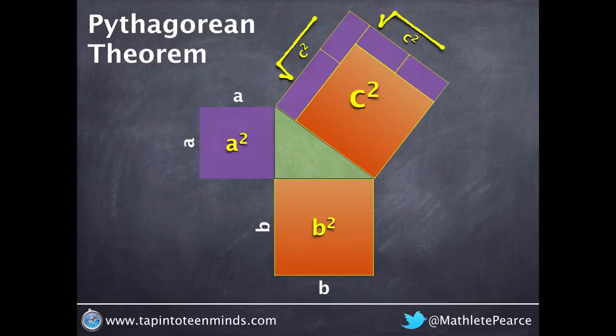Typically the hypotenuse is represented by c, and thus we must square root c squared in order to find the length of the hypotenuse, which is also known as c.